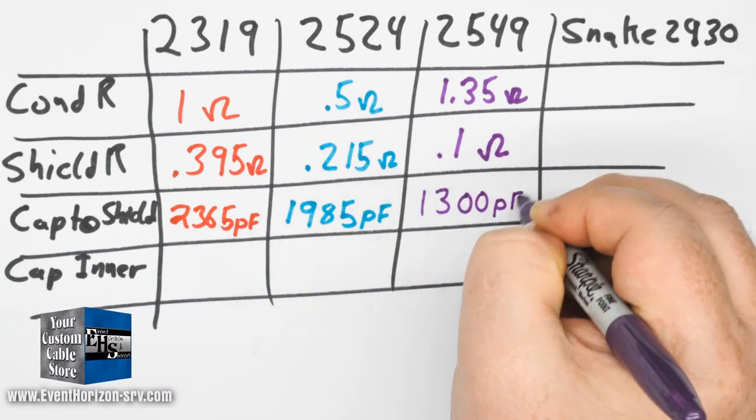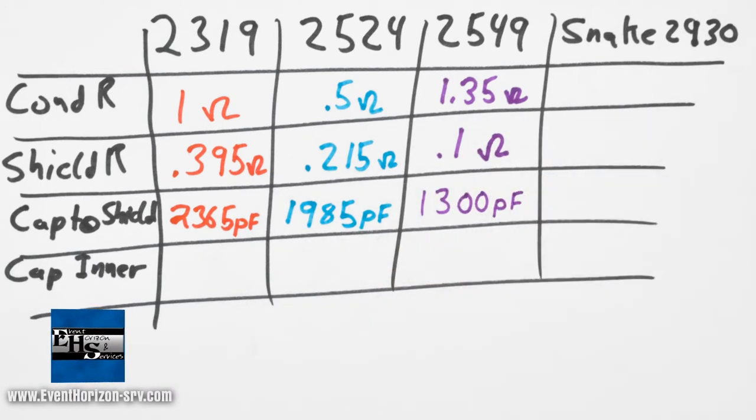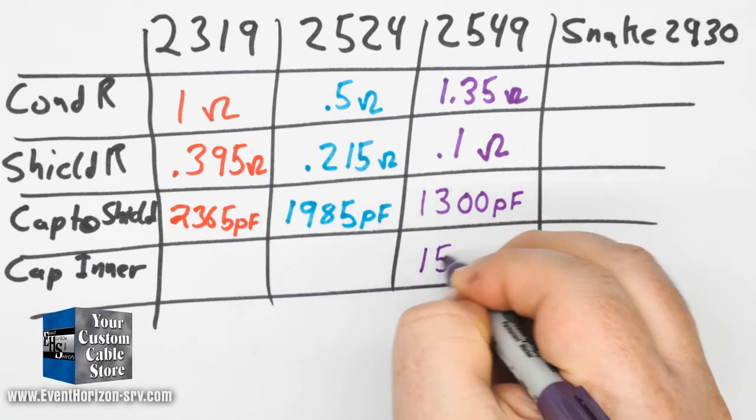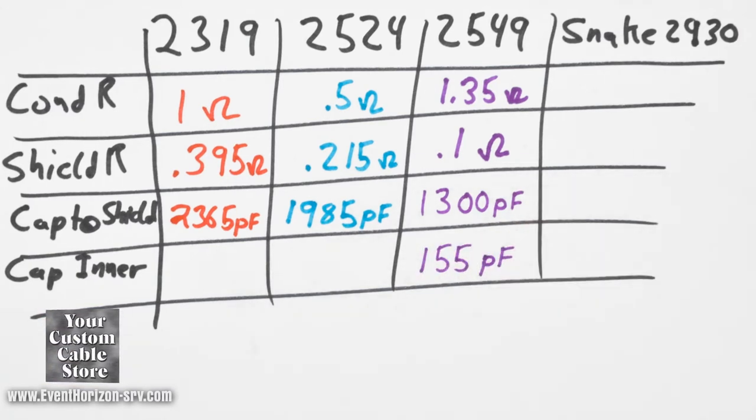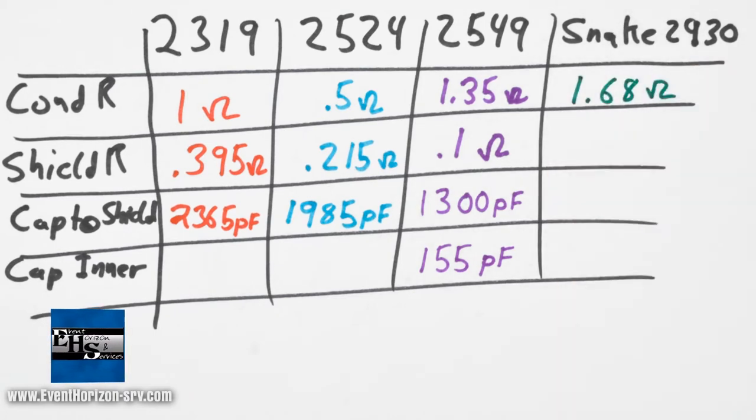Mogami snake wire: conductor resistance is 1.68 ohms, the shield resistance is 0.475 ohms, the capacitance from a conductor to a shield is 2135 picofarads.